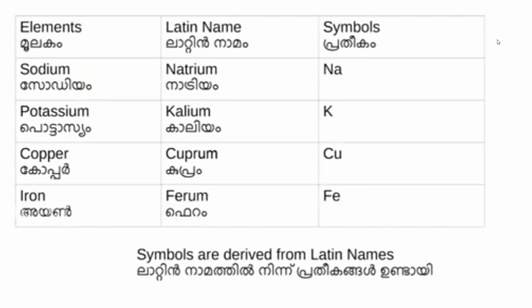You must name the first letters as well as prominent letters. We will use the first and second letters. Sodium Natrium gives Na. Kalium gives K. Cuprum gives Cu. Ferrum gives Fe. Symbols are derived from Latin names.